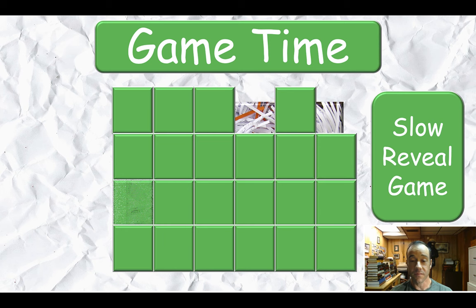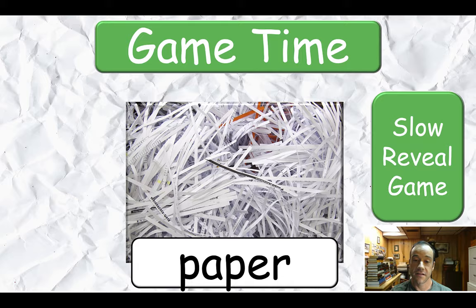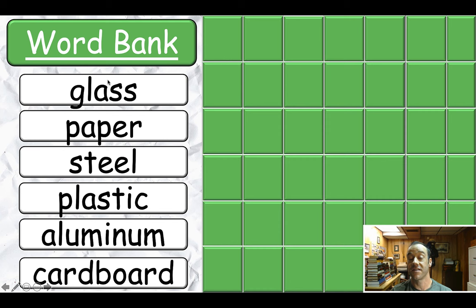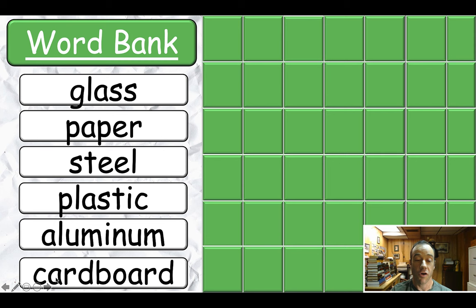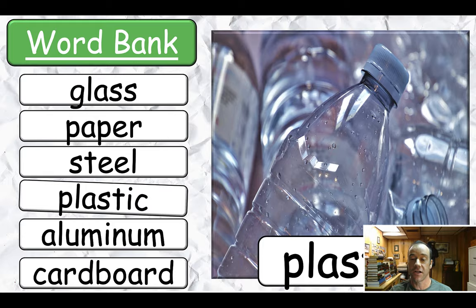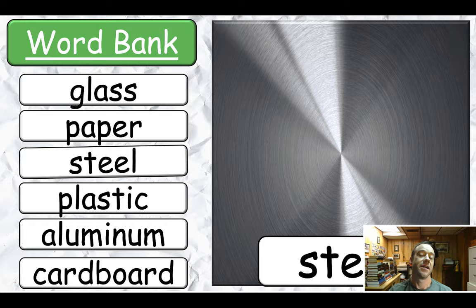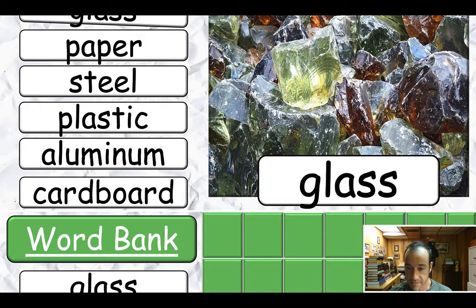Then we have a slow reveal game — another classic that works every time. Right before you play the game, you can have them say the words again to practice their pronunciation: glass, paper, steel, plastic, aluminum, cardboard. Who would like to say them all? You stand up, point at them — glass, paper, steel, plastic, aluminum, cardboard. Who can say it really quickly? Then you do the slow reveal with the whole class playing. It's a fun, effective game for drilling new vocab.